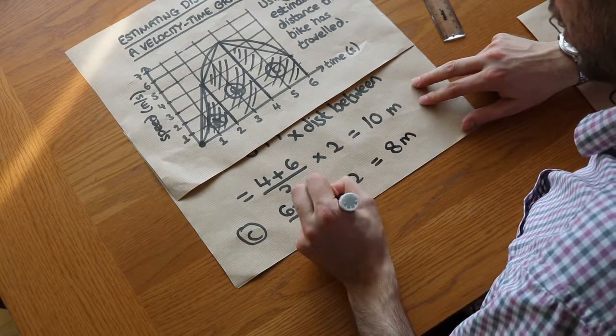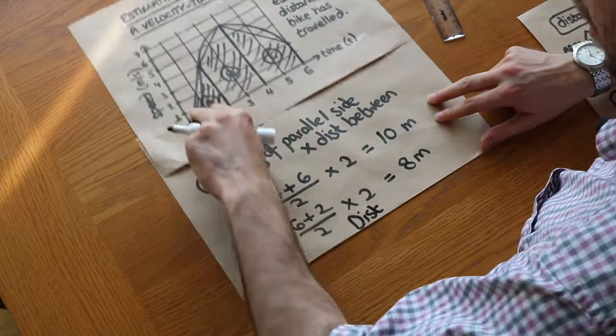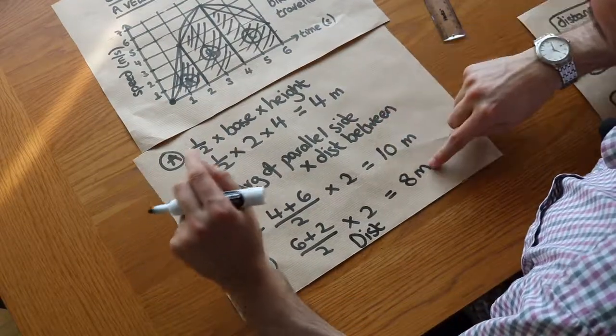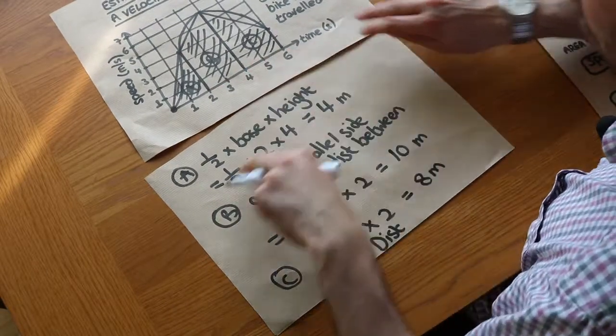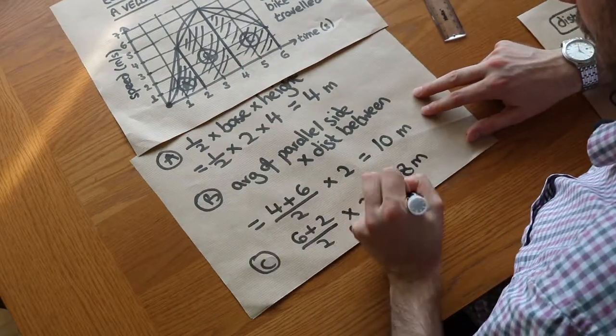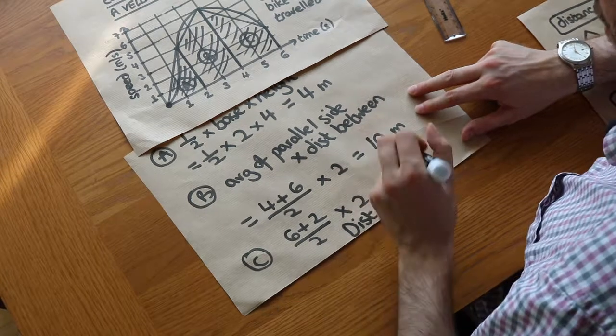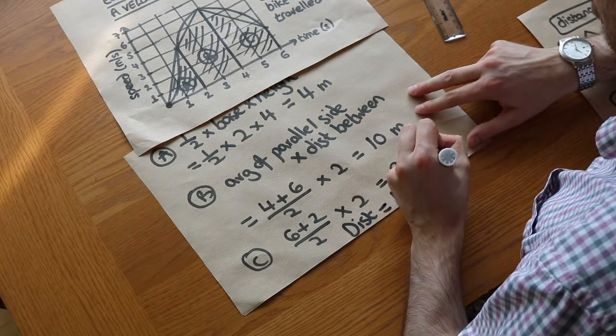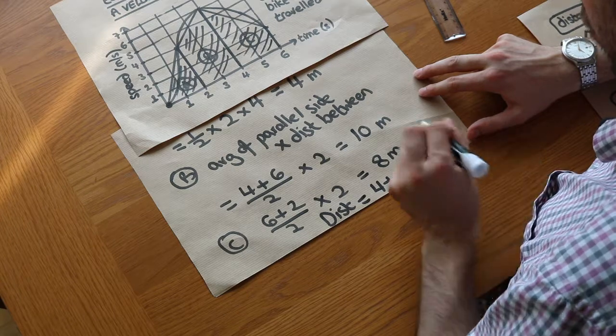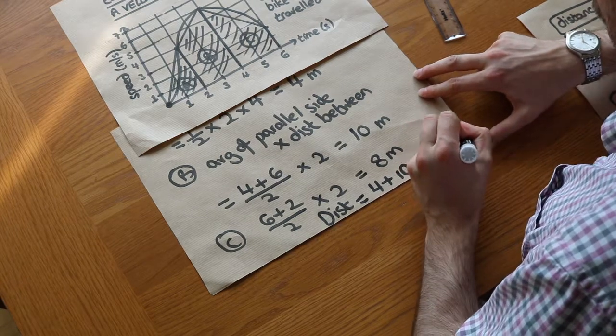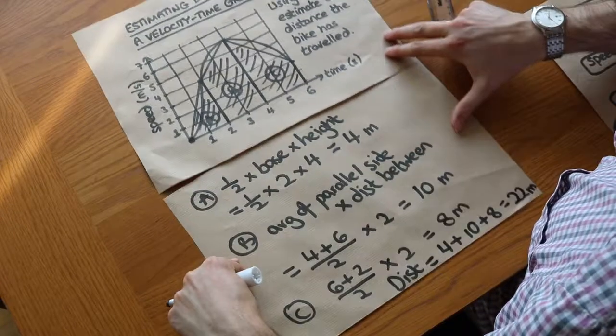And that means the distance is just the sum of these distances traveled in each of the strips. So that's going to be four plus ten plus eight, and that is equal to 22 meters. And that is the final answer.